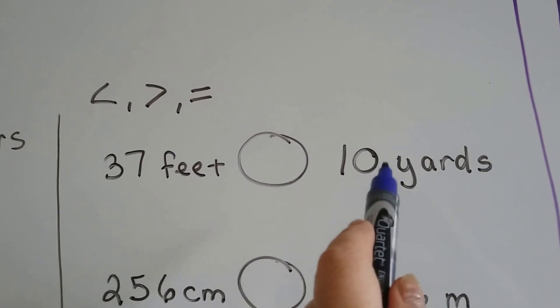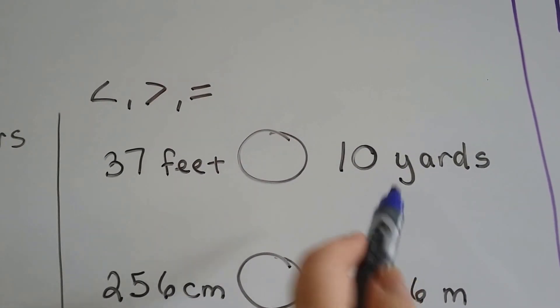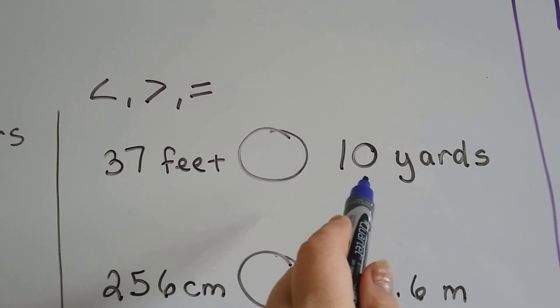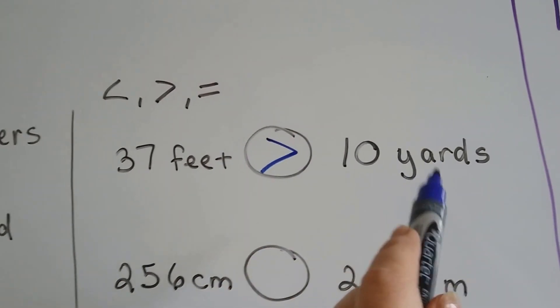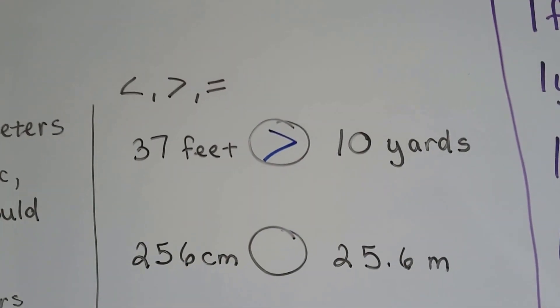10 is easier to multiply by 3, so we'll do that one. That's the quickest. 10 times 3 is 30. That would be 30 feet. So we can see that that one's bigger. See how I chose the more compatible number to work with?